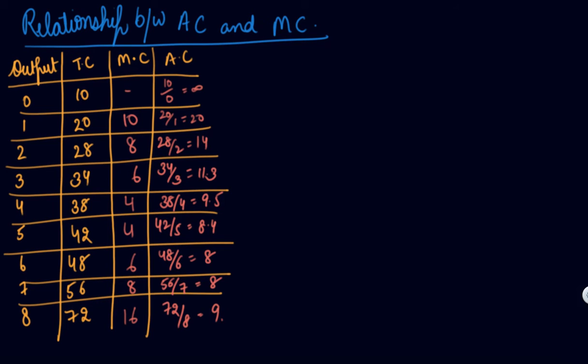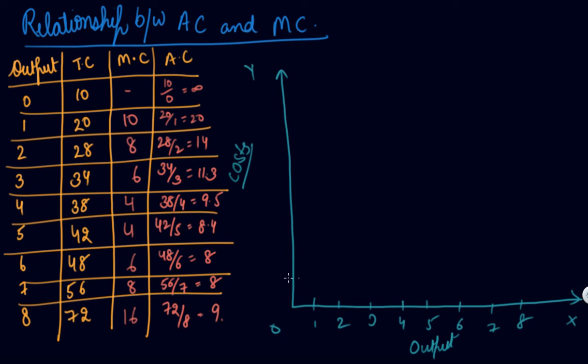Let us make the graph now. Your x-axis, your y-axis. On y-axis you will take all of your costs, and on x-axis you will take your output: 1, 2, 3, 4, 5, 6, 7, and 8. On y-axis, let us take on the scale of 5: 5, 10, 15, 20, 25.